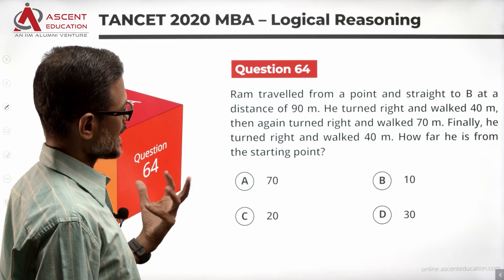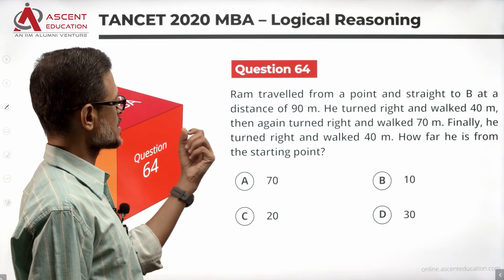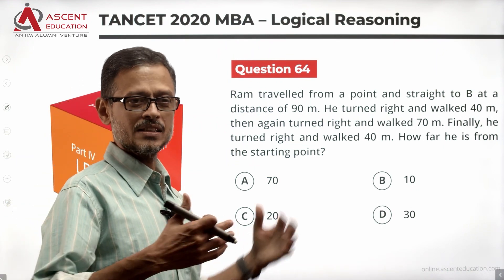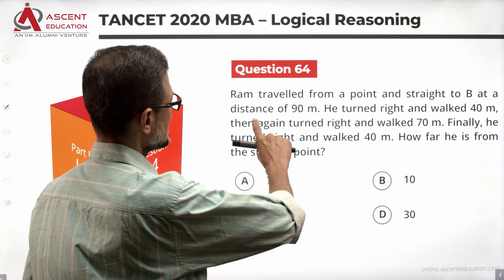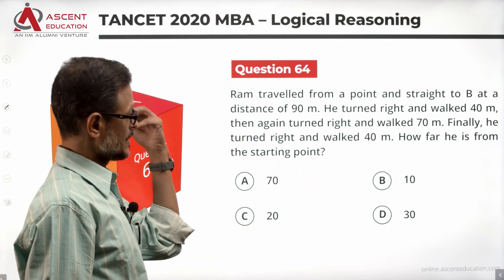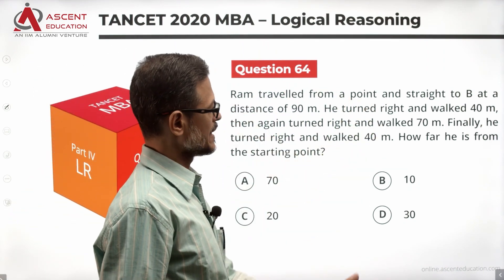Ram traveled from a point straight to B at a distance of 90 meters. So let's draw the diagram. He turned right and walked 40 meters, then turned right again and walked 70 meters.